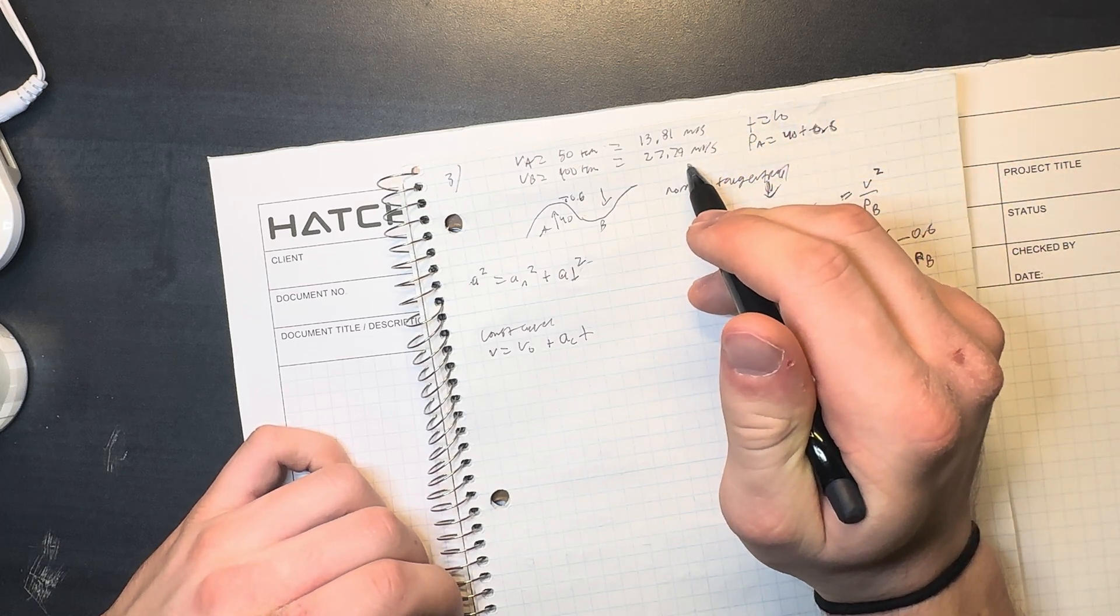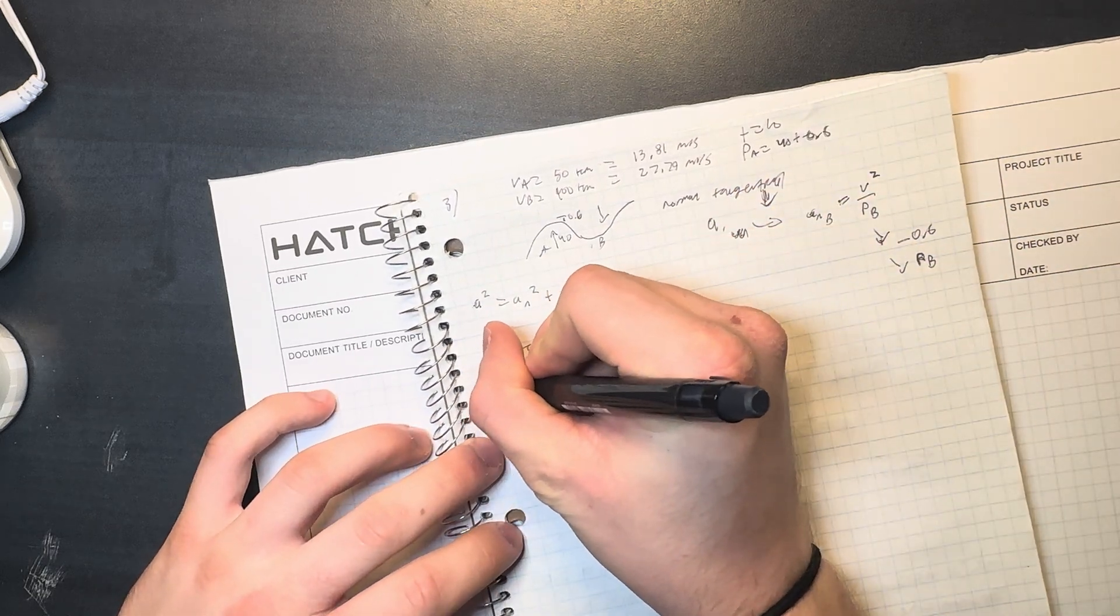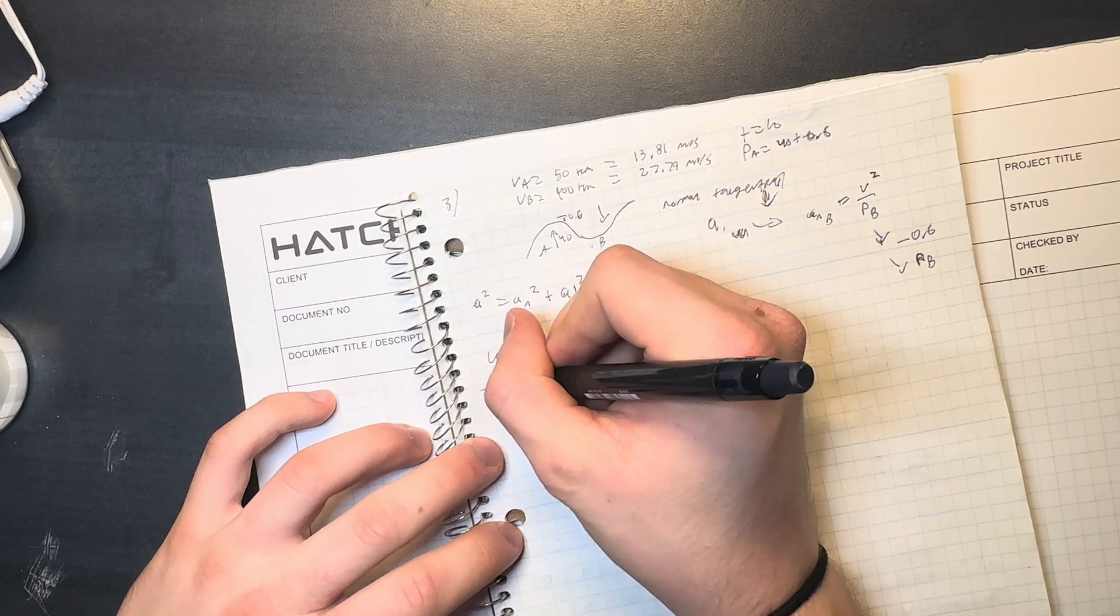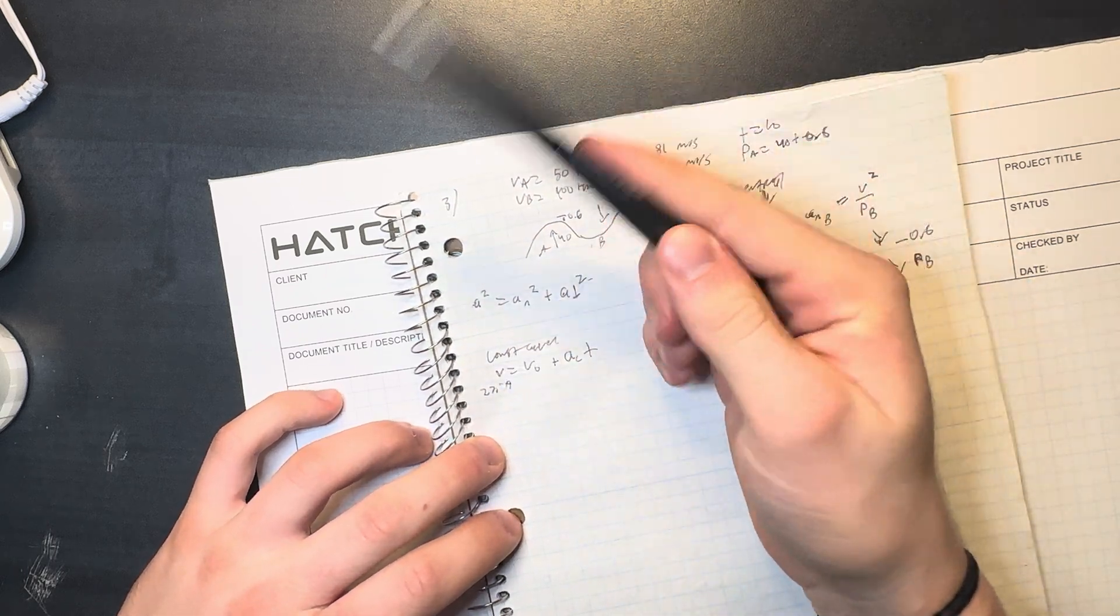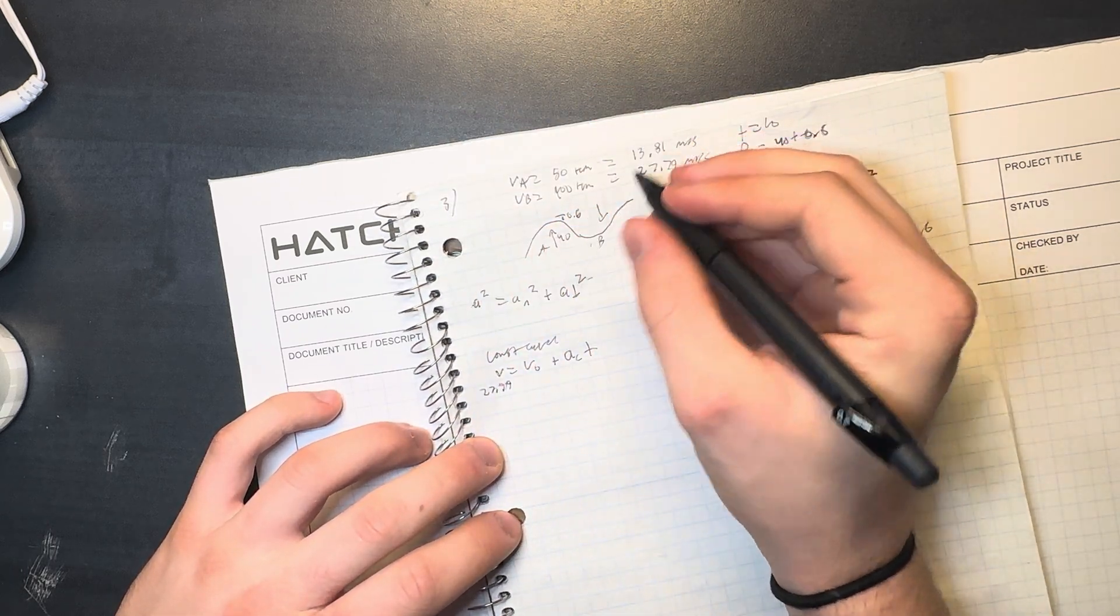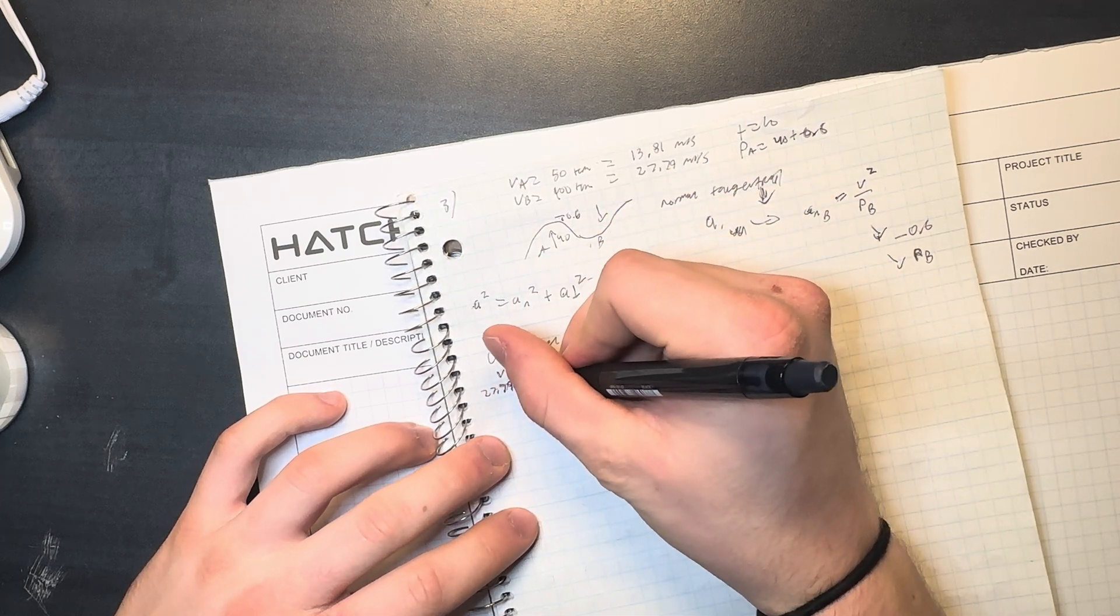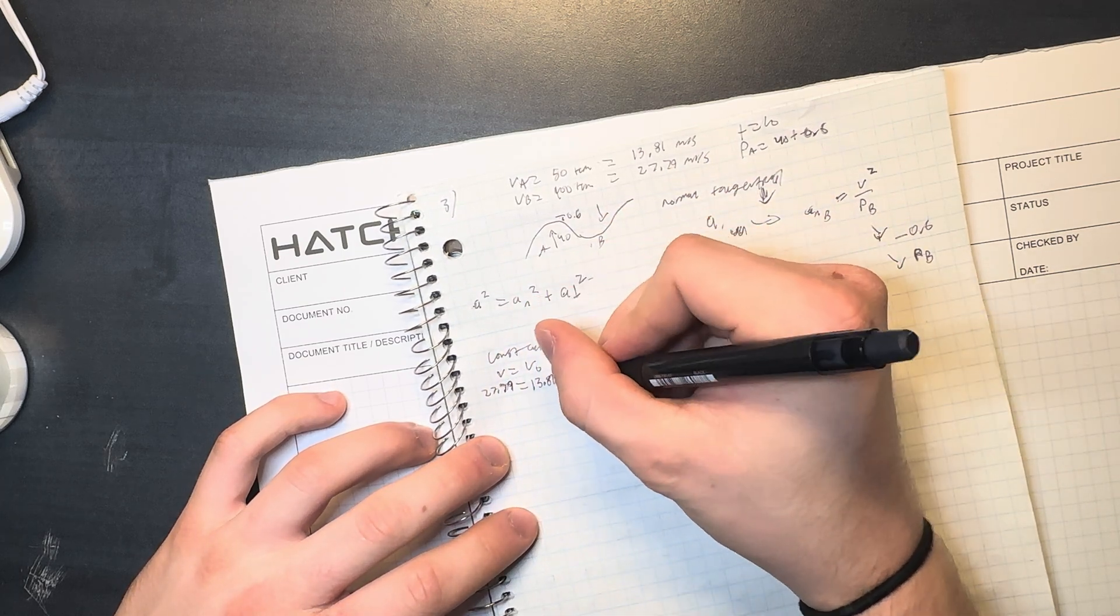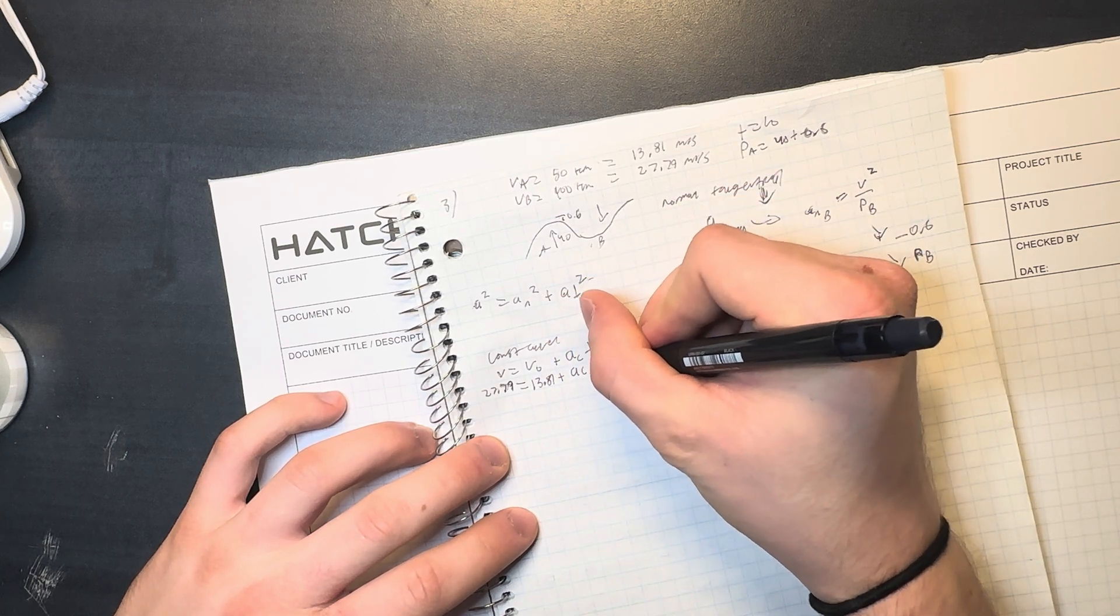The acceleration at the bottom is 27.79 meters per second. We converted from kilometers per hour for this equation to work. And then initial is 13.81 plus we don't know acceleration, but we do know the time is 10.